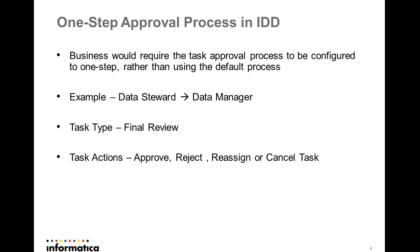The task type that offers the one-step approval process is 'Final Review'. The task actions required to be configured for final review are: approve the task, reject the task, reassign the task, or cancel the task.